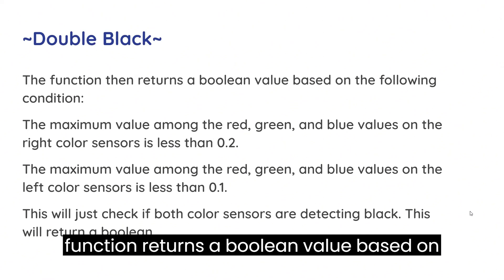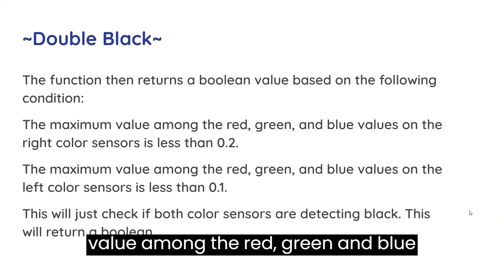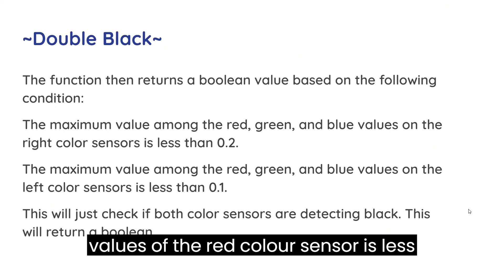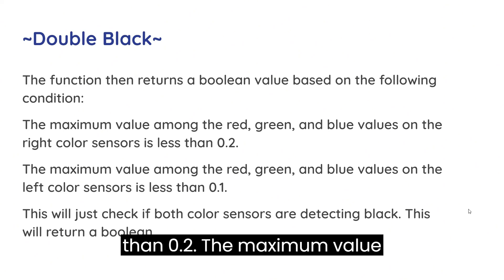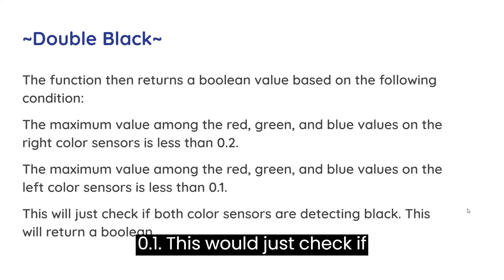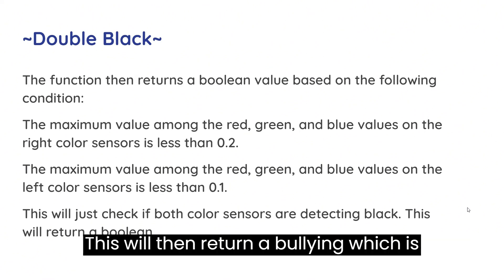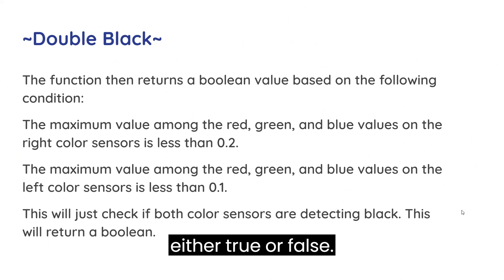The double black function returns a boolean value based on the following conditions. The maximum value among the red, green and blue values of the right color sensor is less than 0.1. This will just check if both color sensors are detecting black. This will then return a boolean, which is either true or false.